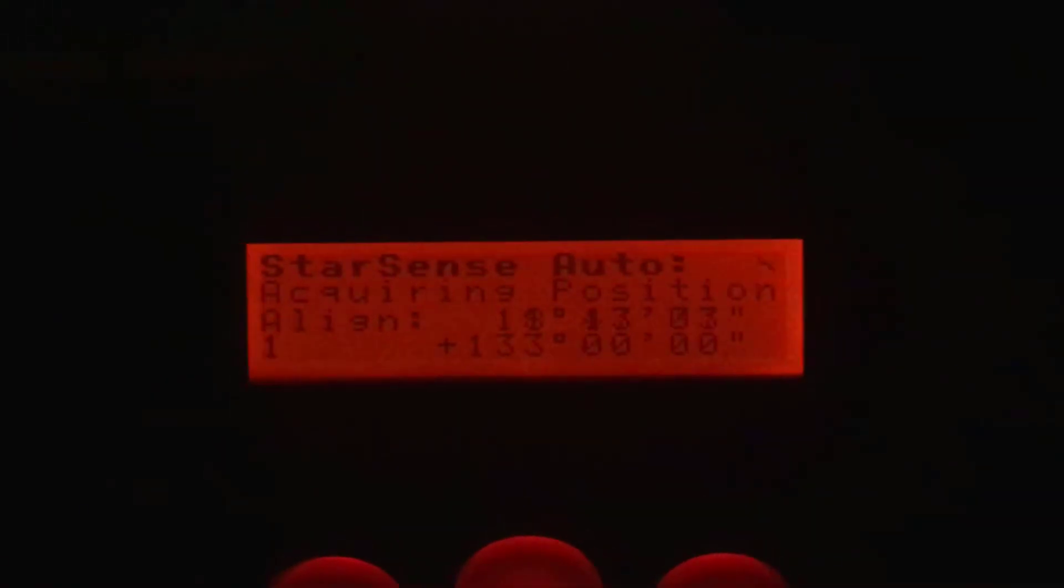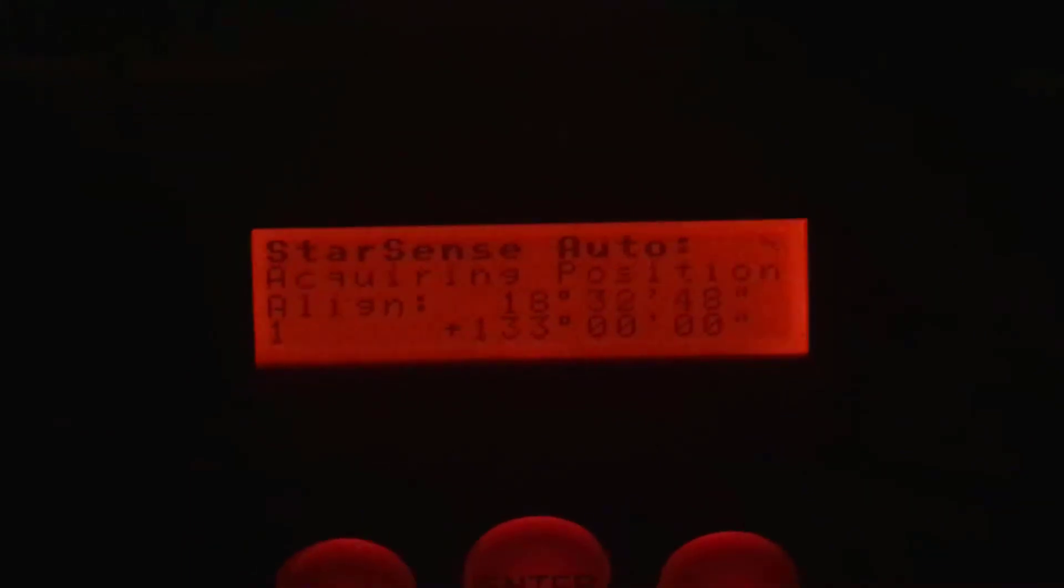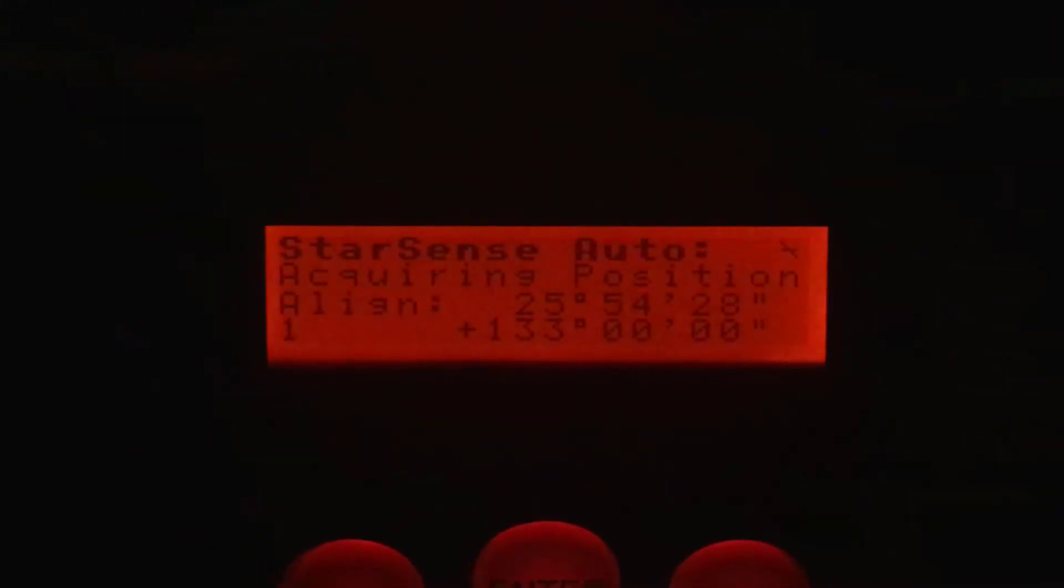And then find StarSense Auto. Hit enter. And it will start the alignment process over again. And then when it's done, you are all done. You're set up and you're calibrated. StarSense is ready to go at that point.